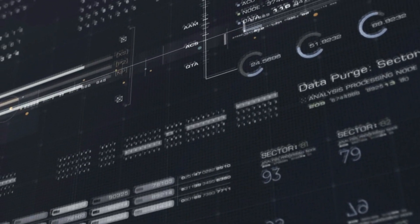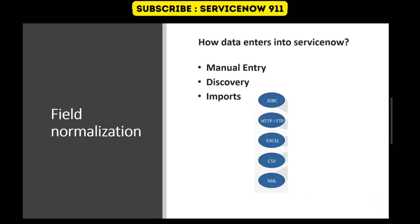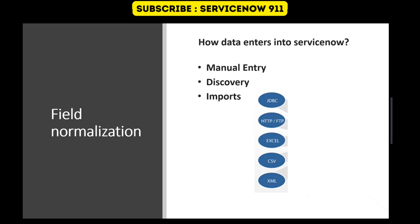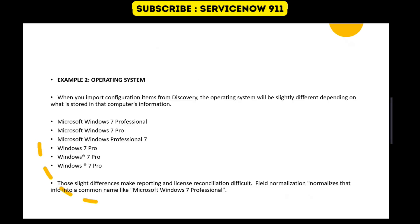So the data is coming from any number of sources, so there will be a high possibility of variation in data structure and data representation. Because data is coming from different sources, let me give you an example. Let's take an example of operating system — it is coming via discovery and there are n number of systems which it will discover. We may expect all these types of options. If it is operating system, then it could be 'Windows 7 Professional' or 'Microsoft Windows 7 Pro.' All these options are possible because what information you feed in the system, it will retrieve. So it is the same thing.